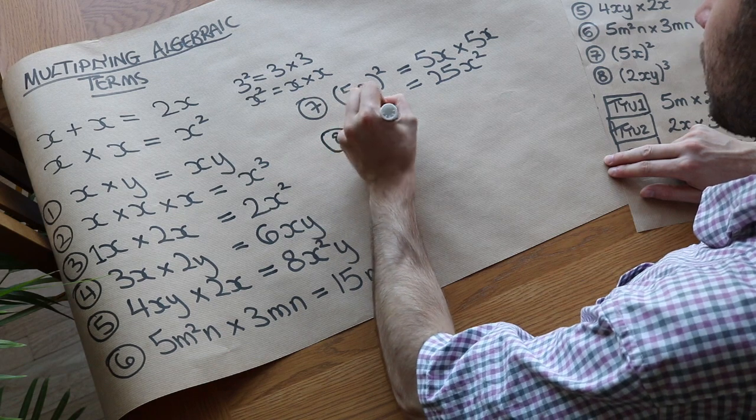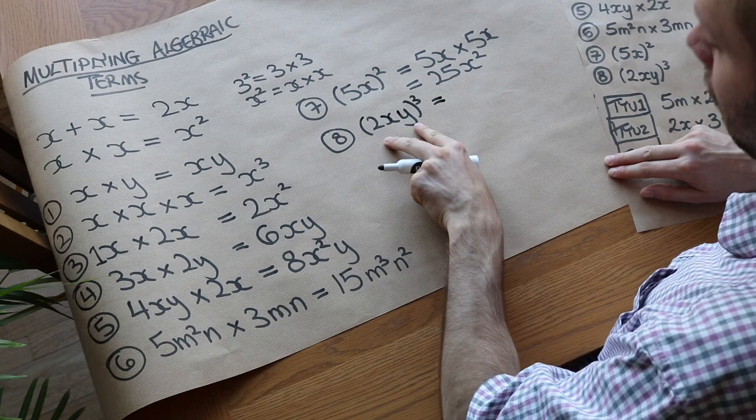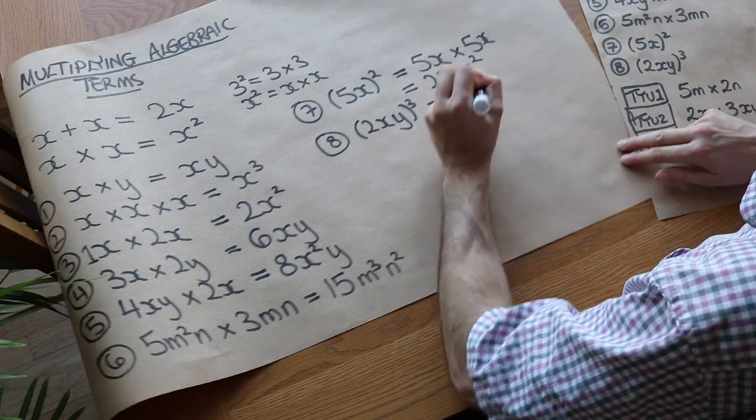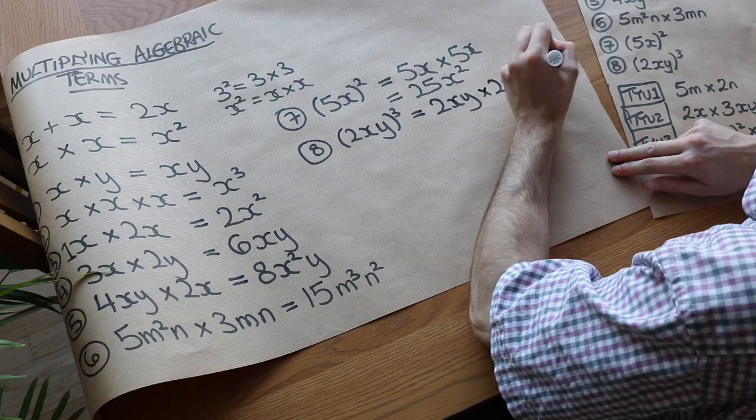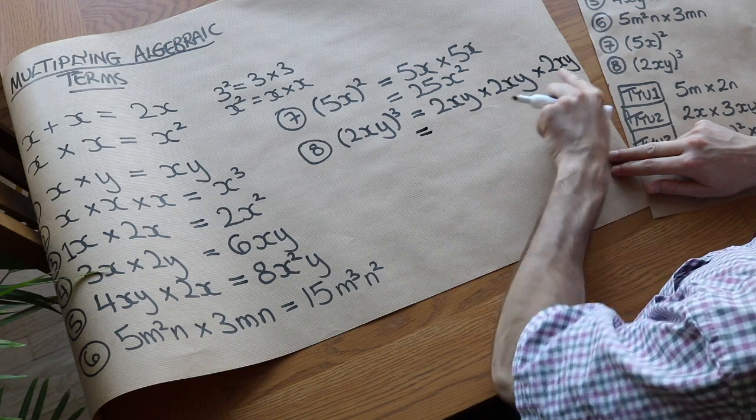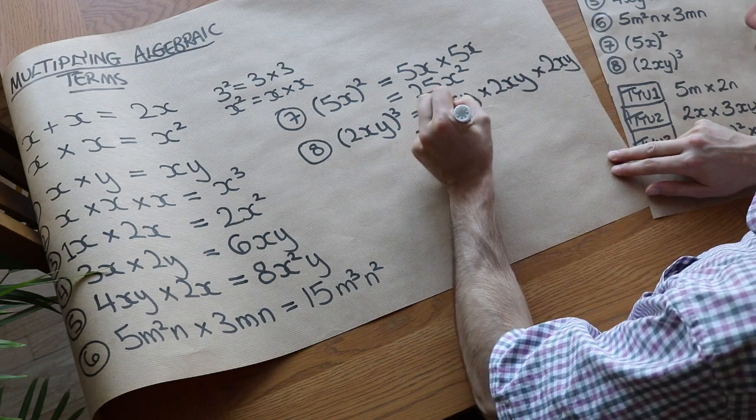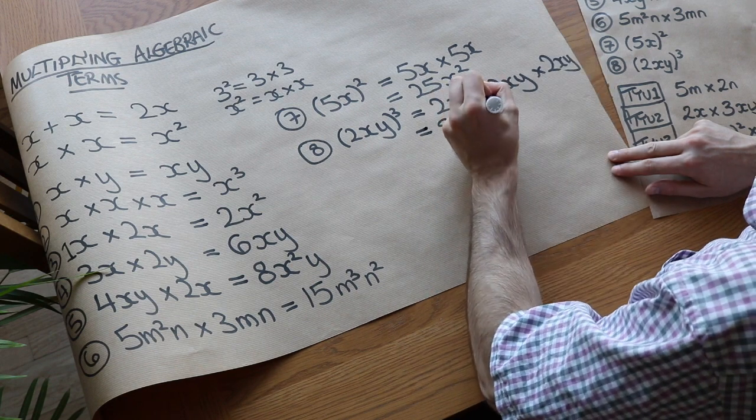And then question eight, we've got 2xy cubed. Anything cubed means that thing times by itself, times by itself. So it's 2xy times 2xy times 2xy. Let's deal with the numbers first. So we've got 2 times 2 times 2 is 8. x times x times x is x cubed. And y times y times y is y cubed.